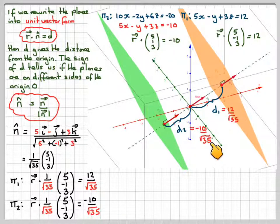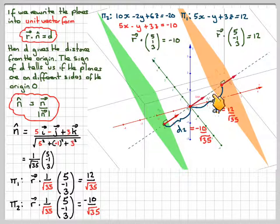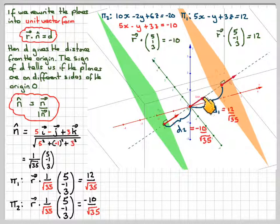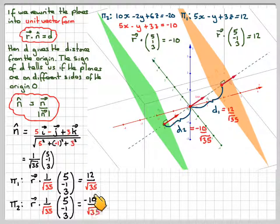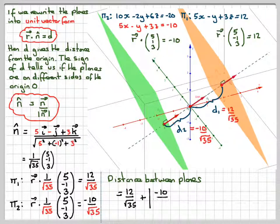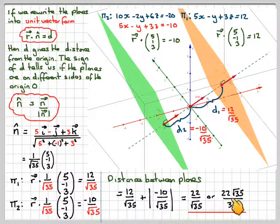The negative sign confirms that the second plane is on the opposite side of the origin from the first. To find the distance between the two planes, we take 12/√35 and add the absolute value of −10/√35, giving 22/√35, or equivalently 22√35/35 when rationalised.